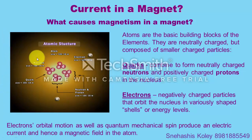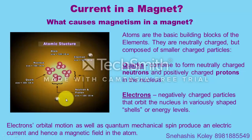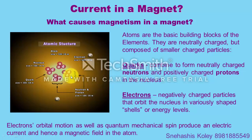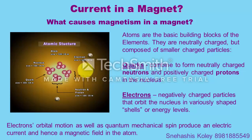You can compare this atomic model with the solar system: the sun is compared with the nucleus and electrons are compared with the different planets. Like planets revolve around the sun at the center of the solar system, electrons revolve in different orbits around the nucleus. When the earth rotates around the sun, it also has a spin called diurnal motion. Likewise, electrons also have spin during their orbital motion, and due to this they produce a current and hence a magnetic field in the atom.